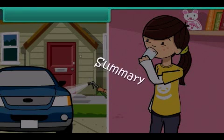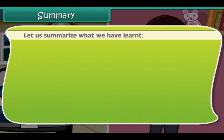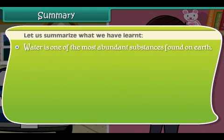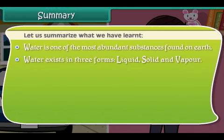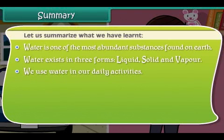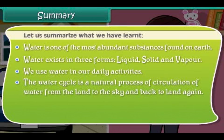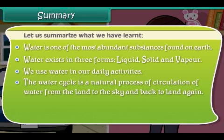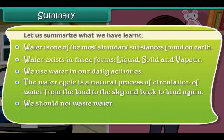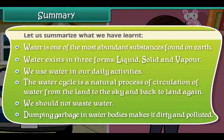Summary: Let's summarize what we have learned so far. Water is one of the most abundant substances found on earth. Water exists in three forms: liquid, solid and vapor. We use water in our daily activities. The water cycle is a natural process of circulation of water from the land to the sky and back to land again. We should not waste water. Dumping garbage in water bodies causes water pollution.